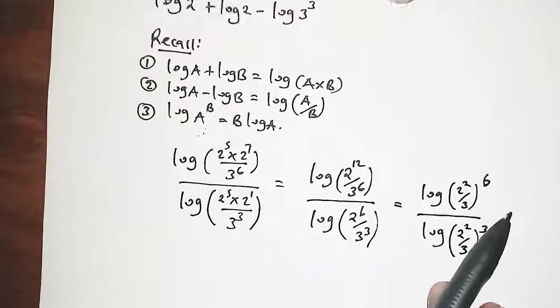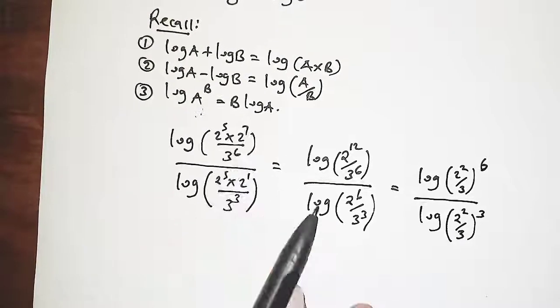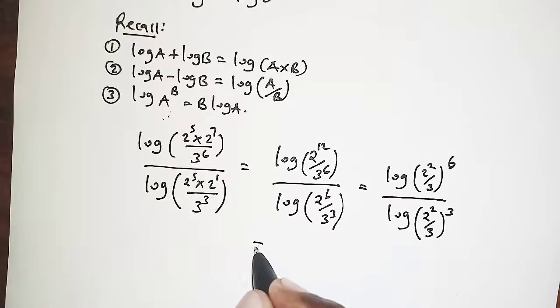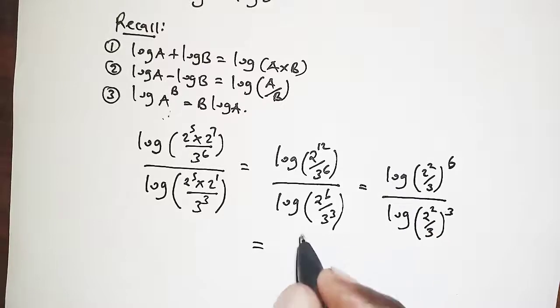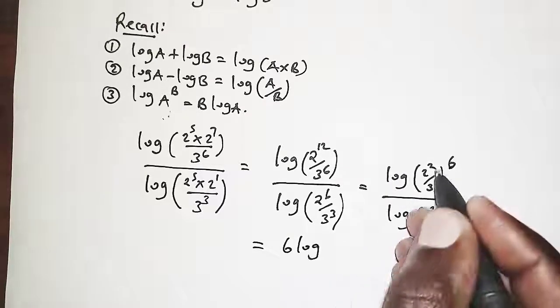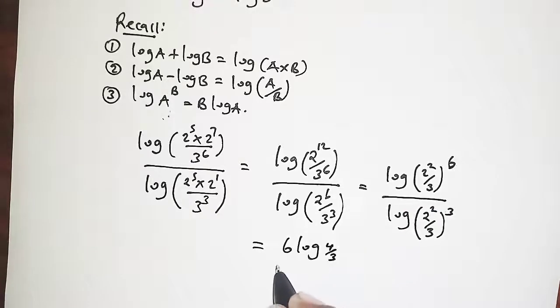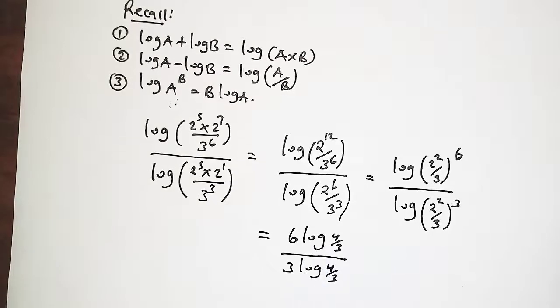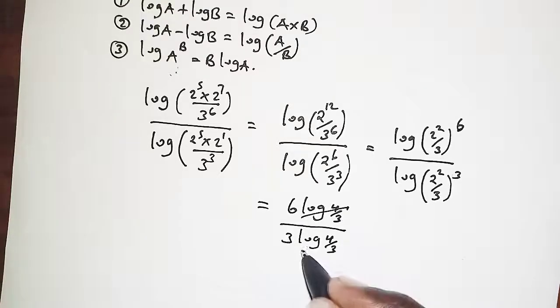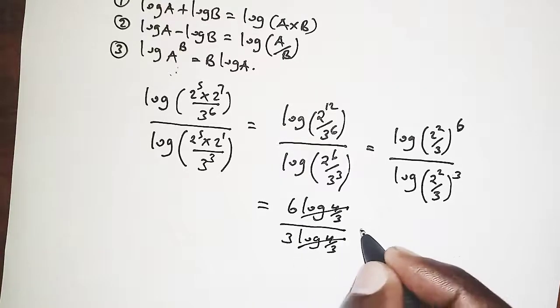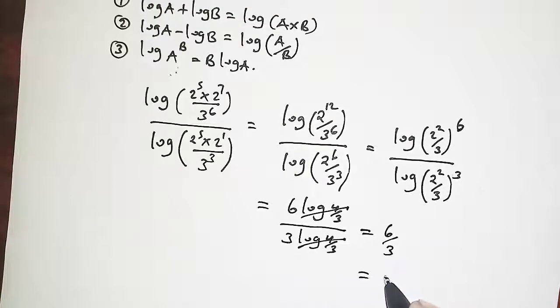We are going to apply law number 3. For this part we have 6 times the logarithm of 2 squared over 3. So 6 logarithm of 4 over 3. On the denominator this becomes 3 times logarithm of 4 over 3. On the numerator and denominator we have logarithm of 4 over 3 which will cancel. We will have 6 over 3 and that is 2.